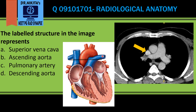If we take a section here, we would see that from right to left the structures are the SVC, the ascending aorta, and the pulmonary artery. This is exactly where this section of the CT chest has been provided.